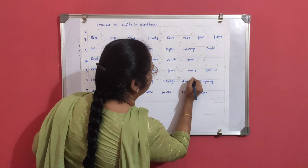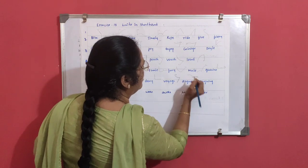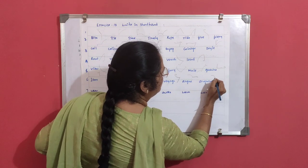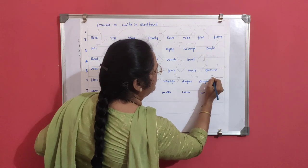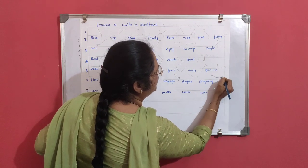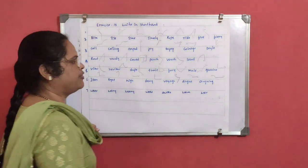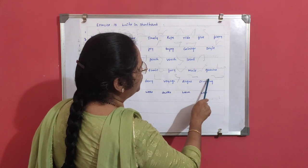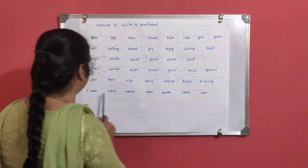Argue: downward R, G, U diphthong. Arguing: downward R, G, ING, U diphthong, one tick — that is a triphone. After ARGU, U and I are both present, hence the triphone is marked.